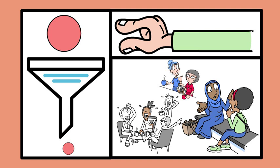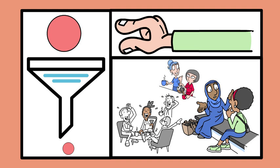Treisman's theory suggests that while you're concentrating on your friend's voice, the background noise is still being processed at a lower level. This is why you might still hear a loud sound or someone mentioning your name, despite not actively listening to the background noise.